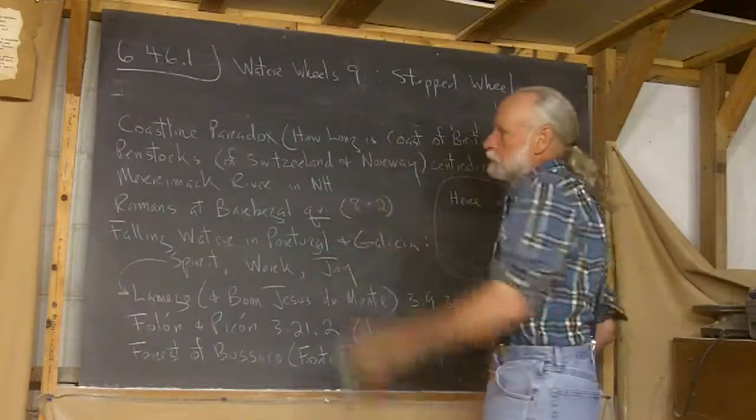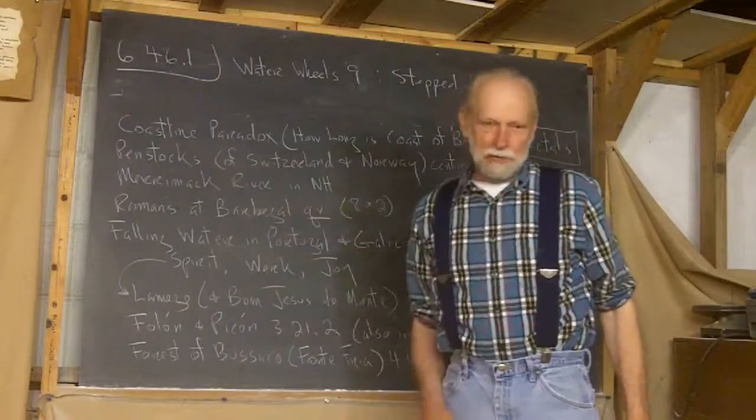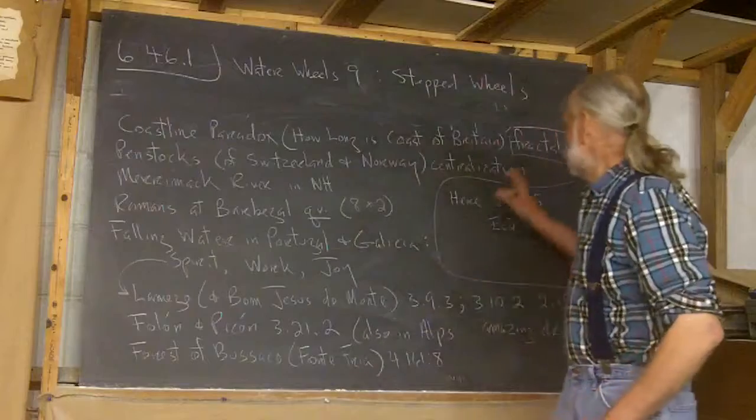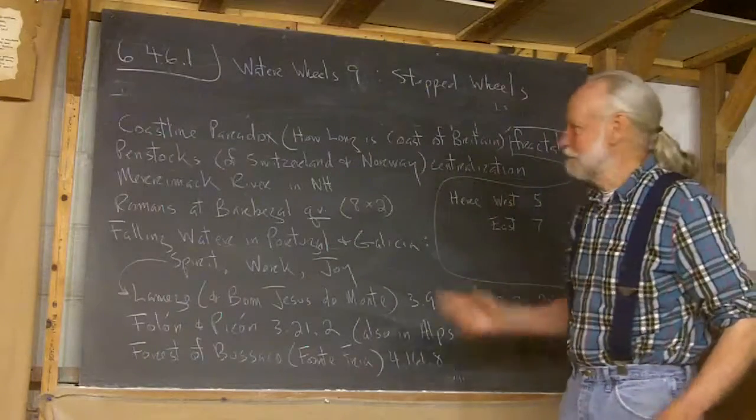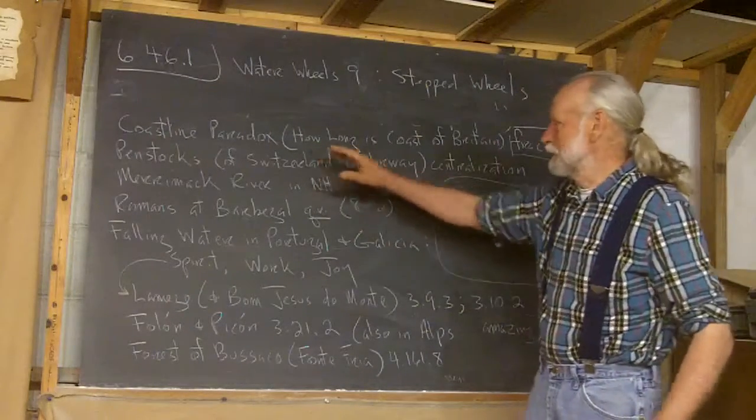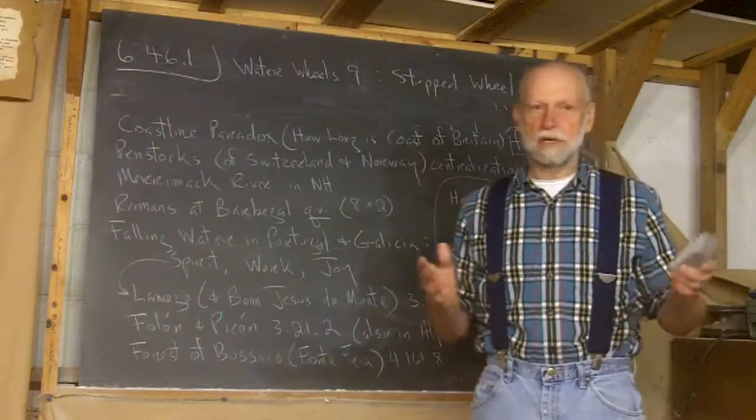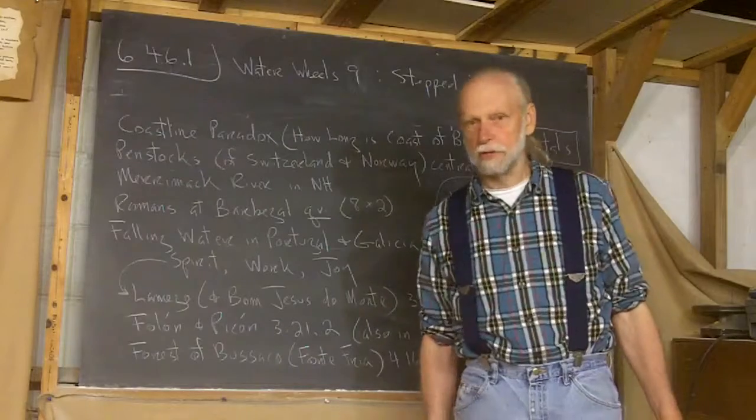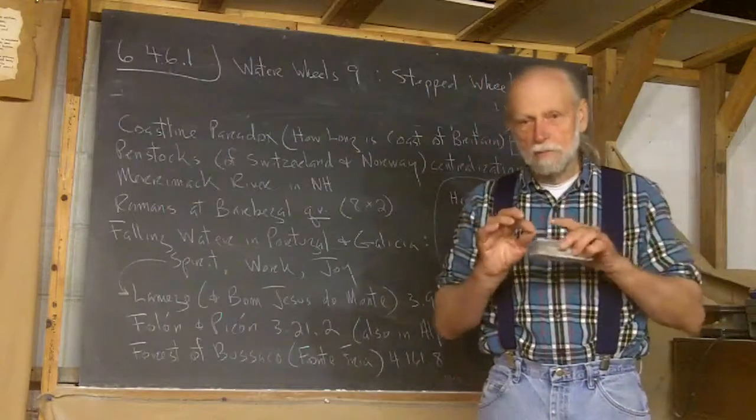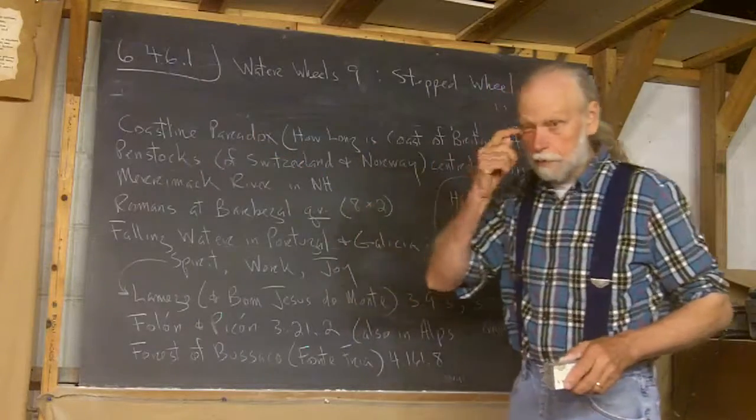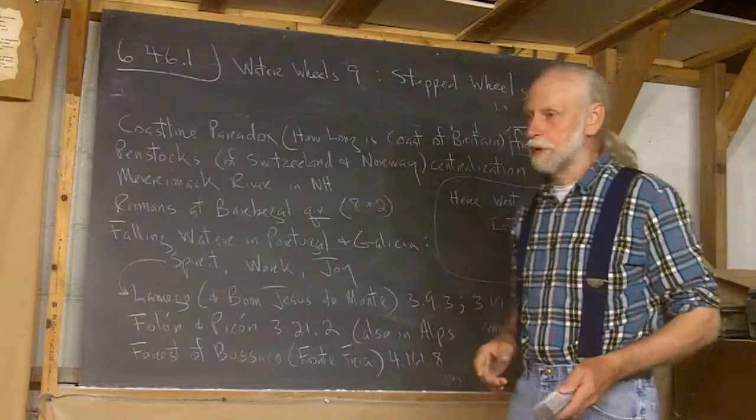Well, this stepped wheels. It made me think of this thing called the coastline paradox. Studying fractals, you find, I ran into this once, the question, how long is the coast of Britain? And the fact is, you can't actually say that. You can't say how long it is, because it depends how minutely you're measuring it. That's been known for quite a long time, and I think it's called the coastline paradox.